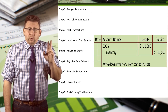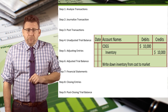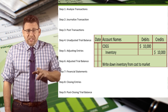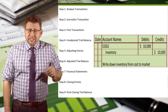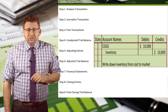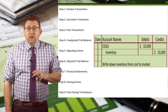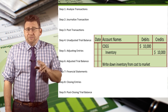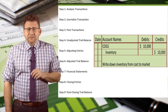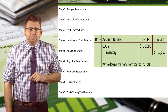If we have to write down our inventory value, then we would record an adjusting entry. In this case, we debit cost of goods sold and credit inventory for $10,000 in order to write the inventory down from $75,000 cost to a $65,000 market replacement value.